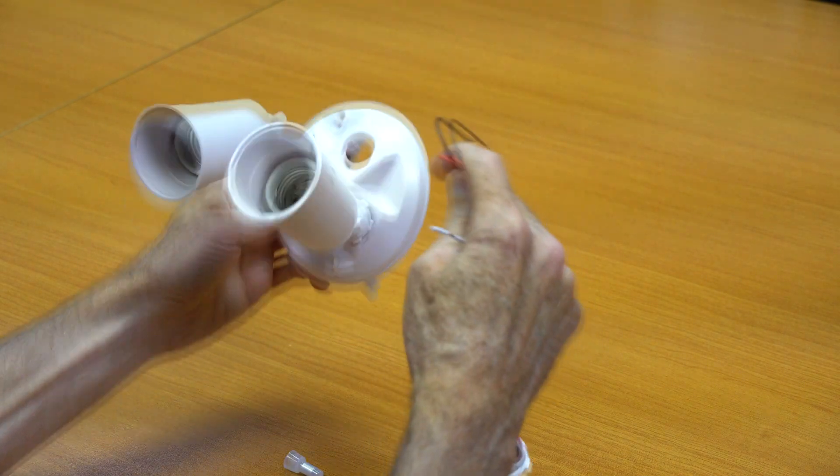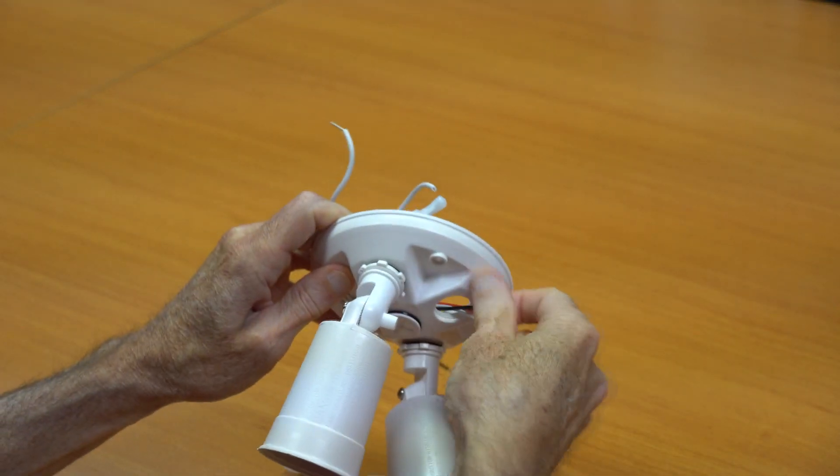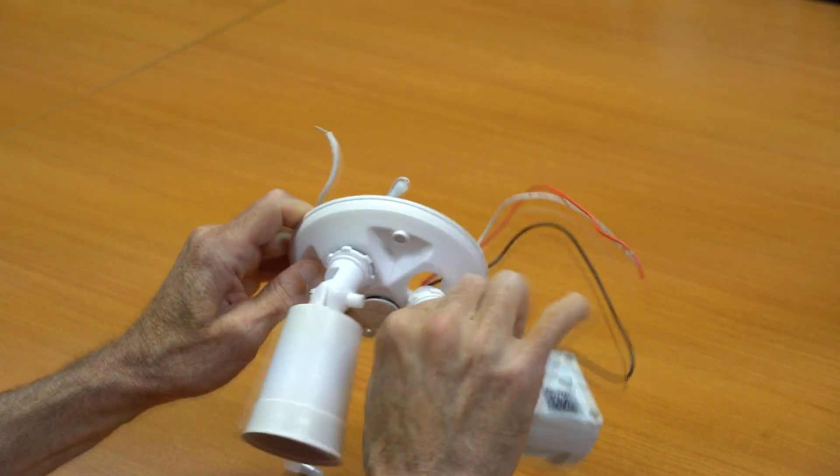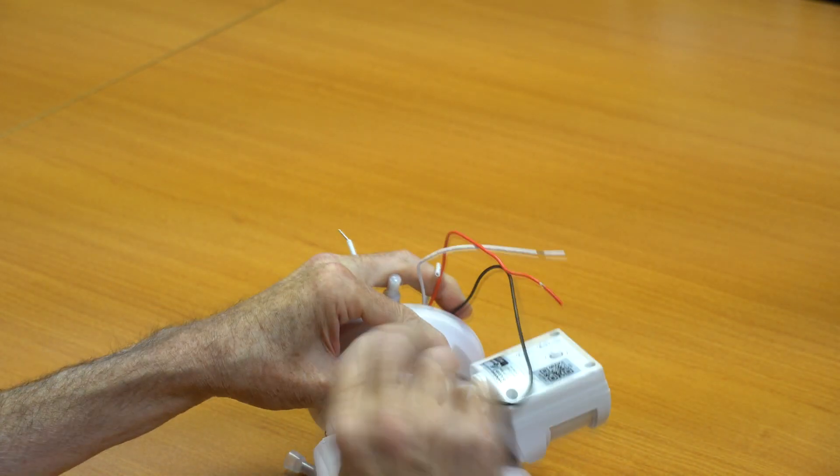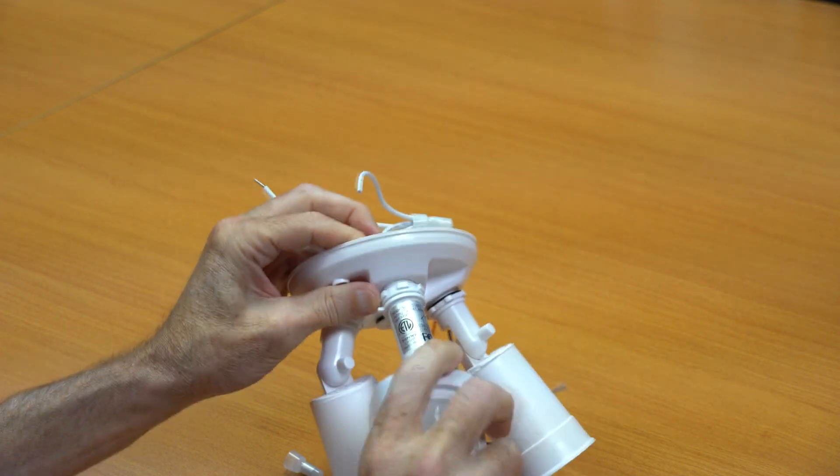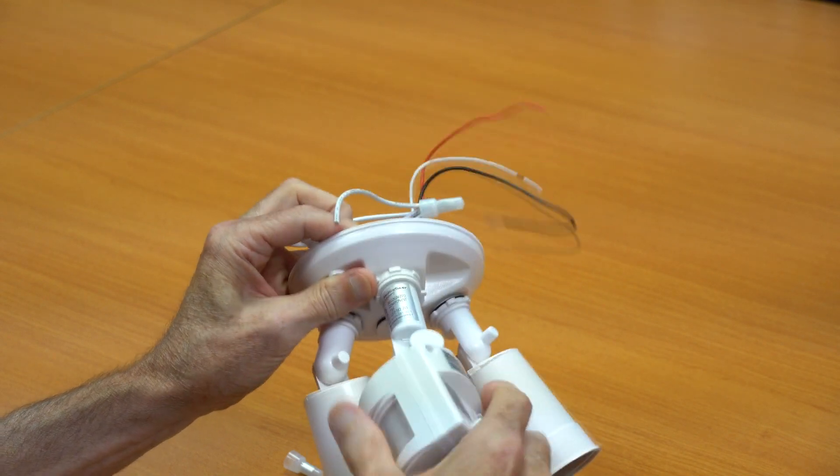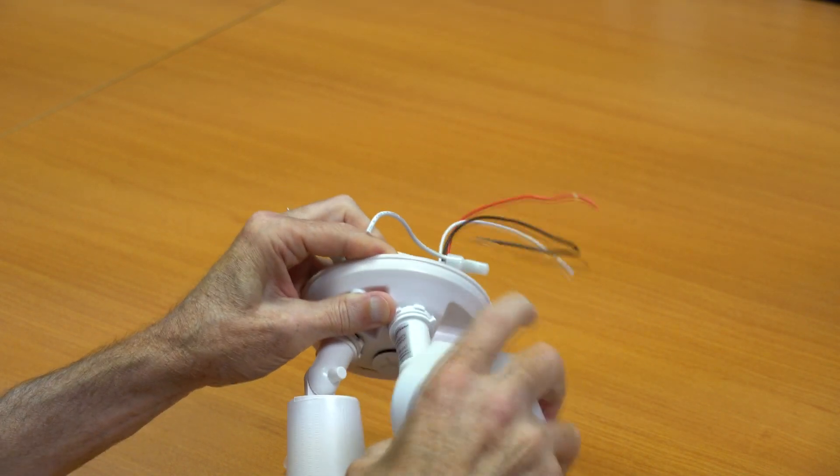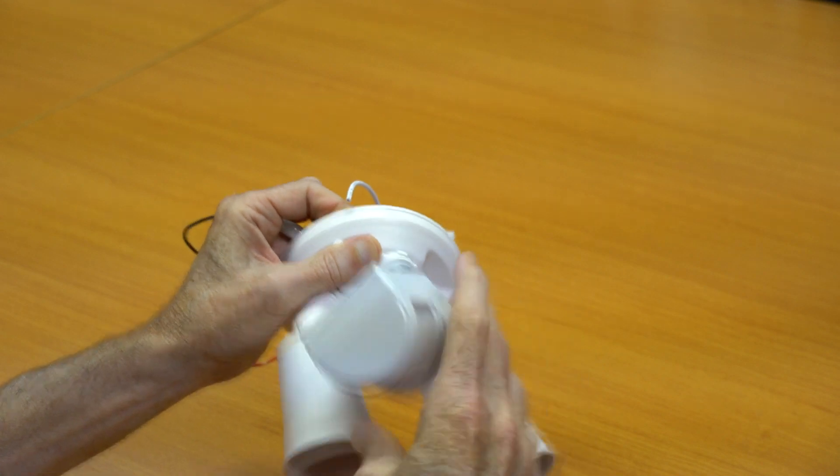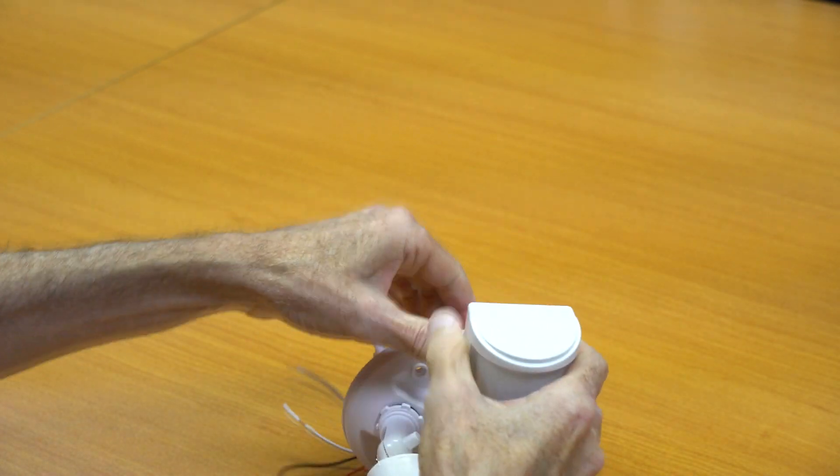Now I'm going to thread the wires for the new sensor through the hole and screw the new sensor in place. Here's where the lock nut comes in handy. Position the sensor just where it needs to be and then tighten things down with the lock nut.